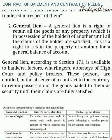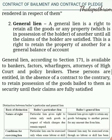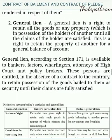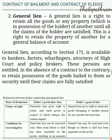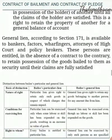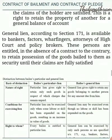Second, General Lien: A general lien is a right to retain all the goods or any property which is in the possession of the holder of another until all the claims of the holder are satisfied. This is a right to retain the property of another for a general balance of account. General lien, according to Section 171, is available to bankers, factors, wharfingers, attorneys of high court and policy brokers. These persons are entitled, in the absence of contract to the contrary, to retain the possession of the goods bailed to them as security until their claims are fully satisfied.